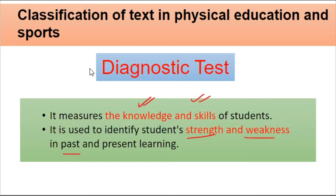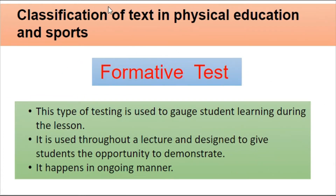The next test is the formative test, which is conducted in a repetitive manner — like your FA exams. Students learn and recall things through this test. For example, if a batsman is always making the same mistake, the coach keeps practicing and recalling with them so that skill can improve. It is an ongoing process, practiced until perfection is achieved.